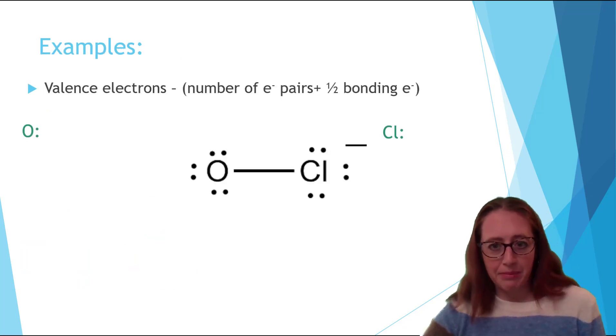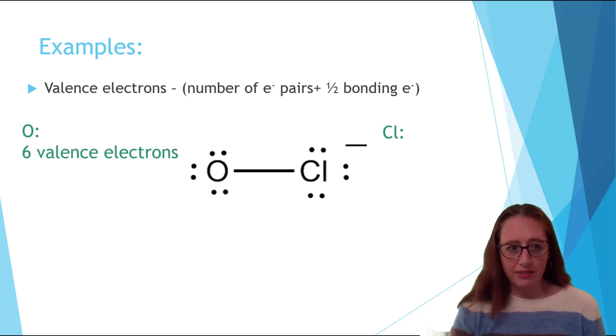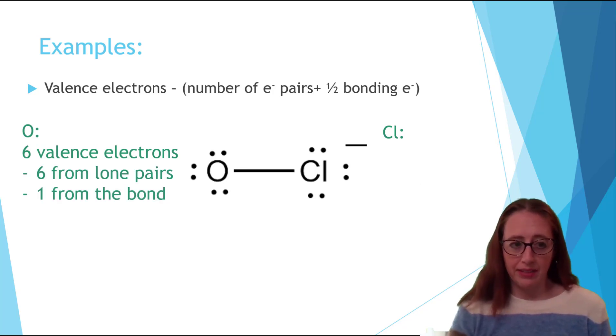Let's do an example. Pause the video and see how far you can get on your own and then come back. Here we have OCl minus. Let's talk through the oxygen first. Oxygen has six valence electrons. In this molecule it has six from the lone pairs and one from the bond so for a total of seven. This gives us a negative one charge.